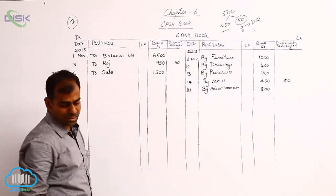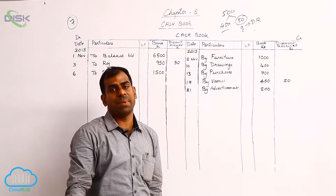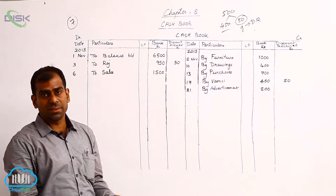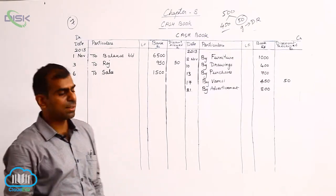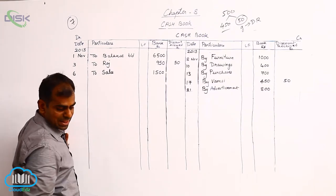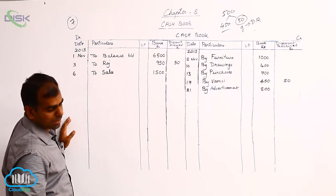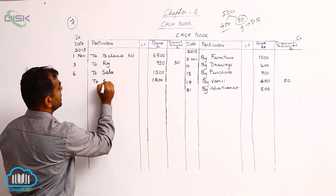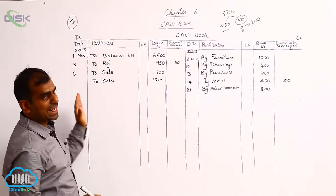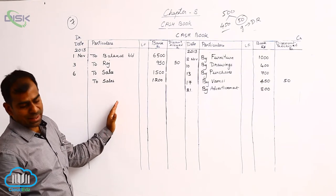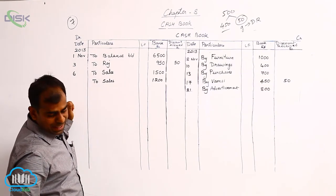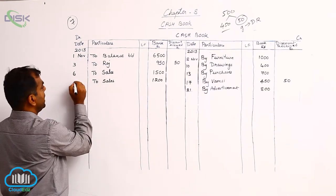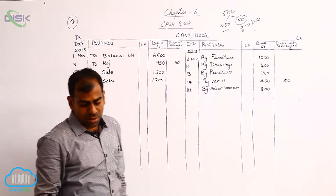Next, on the 23rd, goods were sold to Ramana and a check was received. Money is coming in, so record the amount on the debit side — 1200 in the bank column. Since it is a cash sale, Ramana's name is not important; we directly write 'sales'. The amount is 1200 and the date is the 23rd.